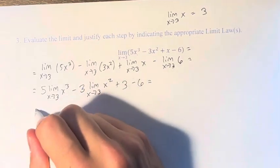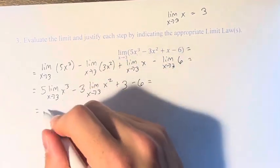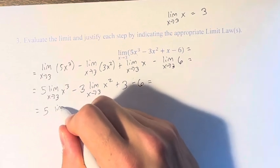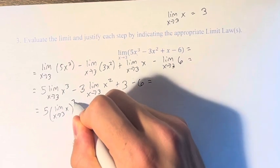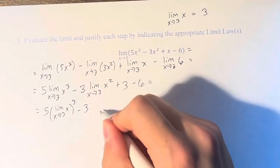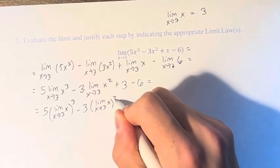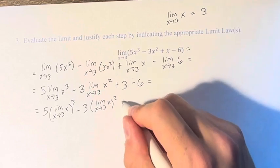Next step is to take these exponents and say the limit of x cubed is equal to the limit of x cubed. The limit of x squared is equal to the limit of x squared. And then plus 3 minus 6 is minus 3.